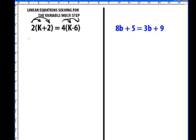The first thing we do is 2 times k, which gives us 2k. 2 times 2, which gives us 4, equals 4 times k gives us 4k. And 4 times negative 6 gives us negative 24. You can do those on the calculator if you need to.